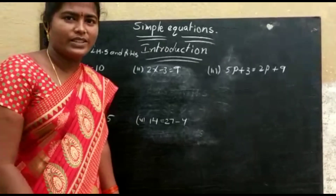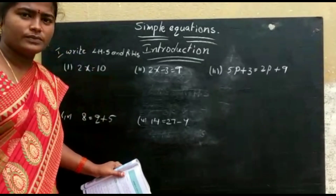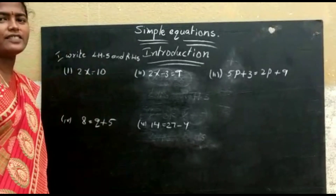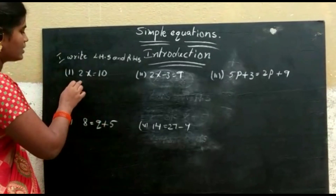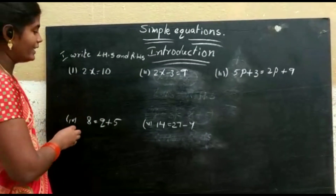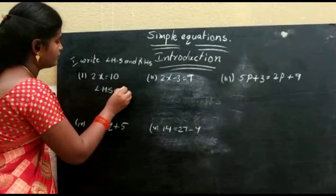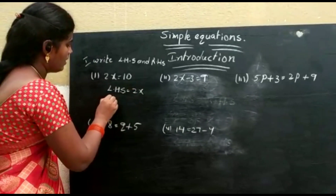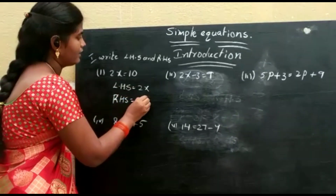Hello students. These are my examples of simple equations — identify the LHS and RHS. First one: 2x is equal to 10. LHS is equal to 2x.